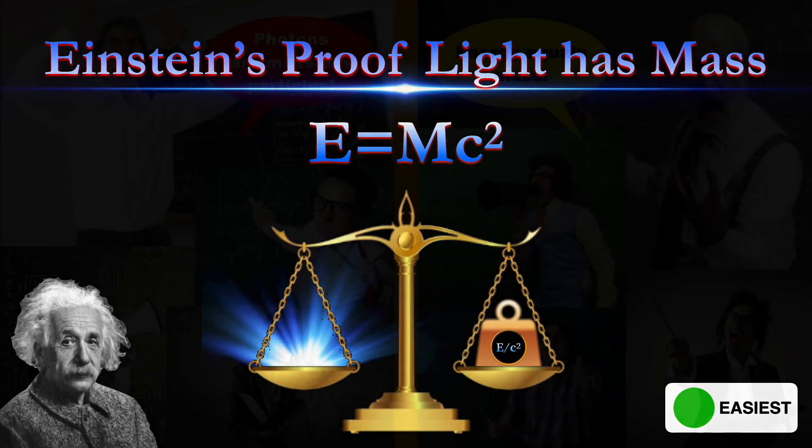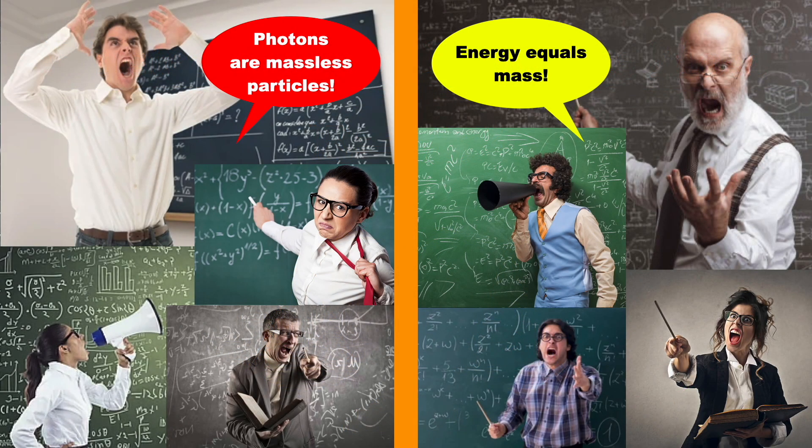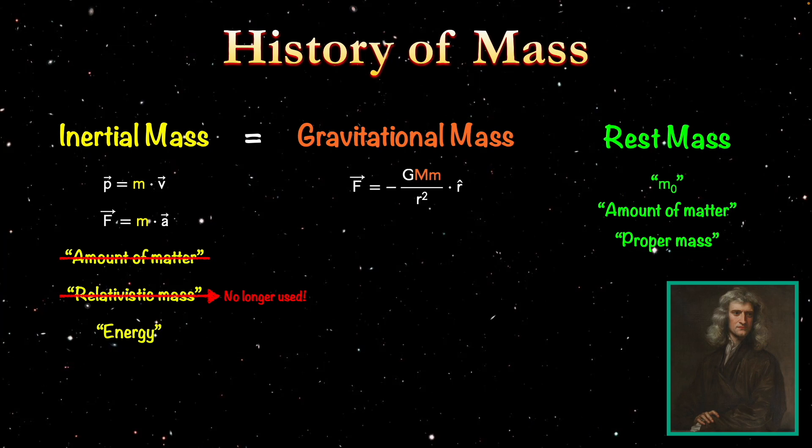In a previous video where I answered the question does light have mass, I explained that this question is the subject of an ongoing debate between two camps among physicists. This entire debate comes down to a semantics question of what do we mean by mass, and it arose because the term mass has been used for various different quantities and in various different ways over the history of physics.